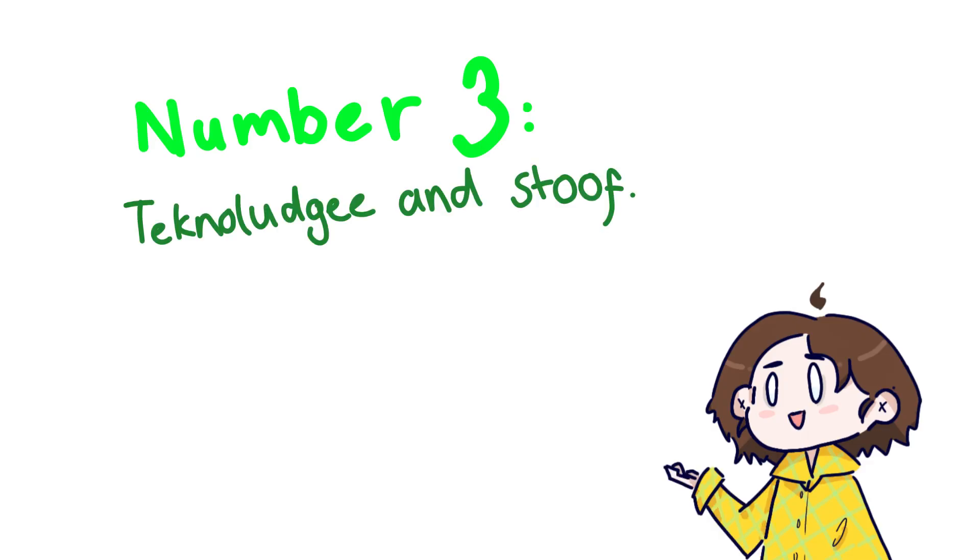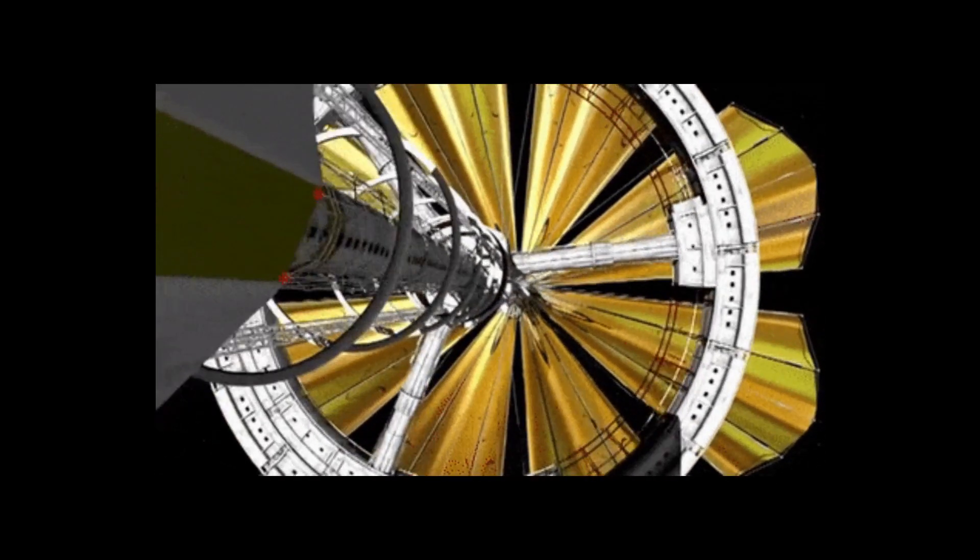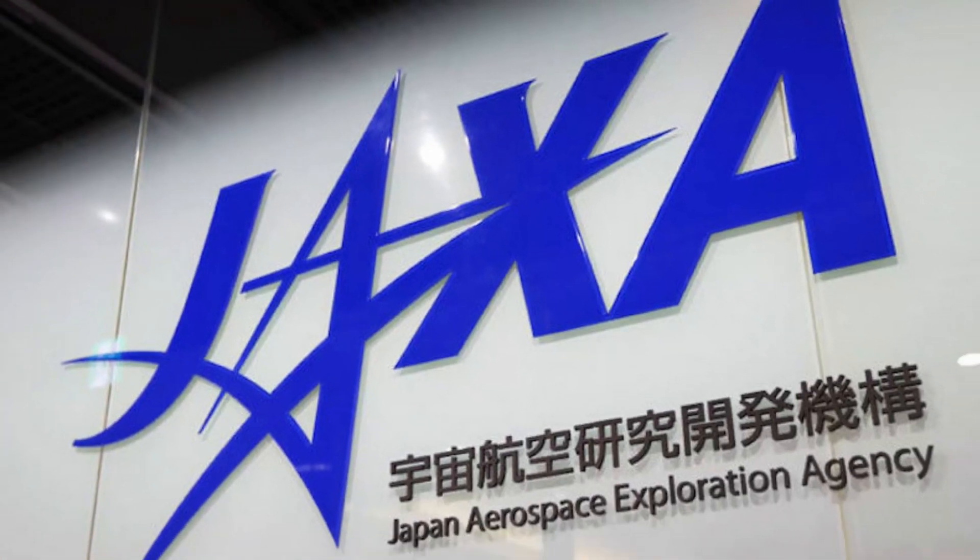Number three, imagine the technological impact. You can push stuff with light. For example, you could put a reflective surface on spacecraft and have them be pushed by the sun. In fact, the Japan Aerospace Exploration Agency, or JAXA, has already succeeded in doing this.